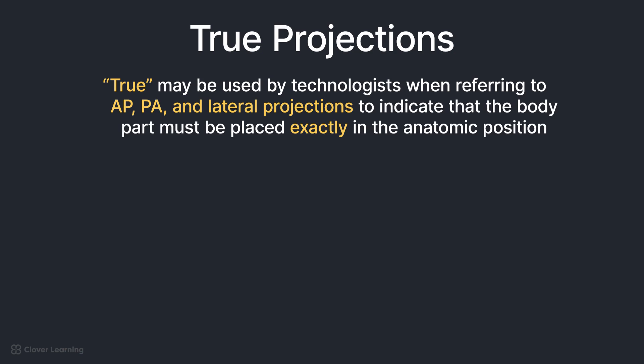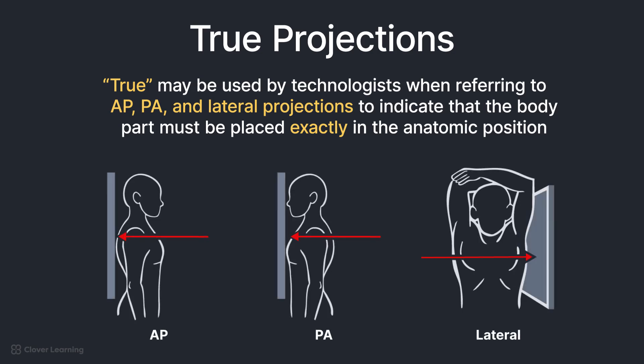The term 'true' may be used by technologists in the clinical setting when referring to AP, PA, and lateral projections. This indicates that the body part must be placed exactly in the anatomic position. A true AP or PA projection is obtained when the central ray is perpendicular to the coronal plane and parallel to the sagittal plane. A true lateral projection is obtained when the central ray is parallel to the coronal plane and perpendicular to the sagittal plane.